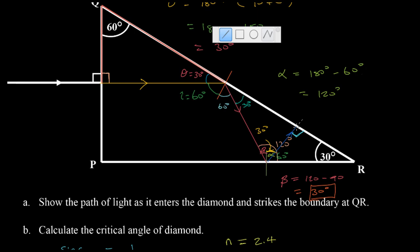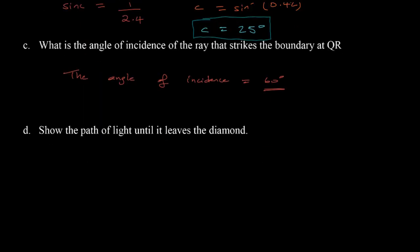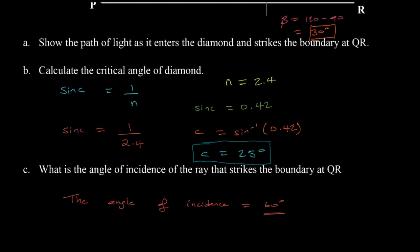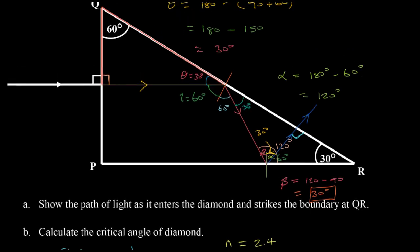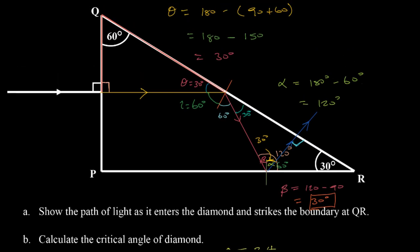The ray continues straight out through the boundary. So what happens is: the light enters the diamond, undergoes total internal reflection at QR, undergoes total internal reflection again at the next face, and then exits at this point. If you have any questions on this video, post them in the comments and I'll do my best to clear up any misconceptions. If this was helpful, click subscribe and hit the bell to be notified when I post new videos. Thank you for watching.